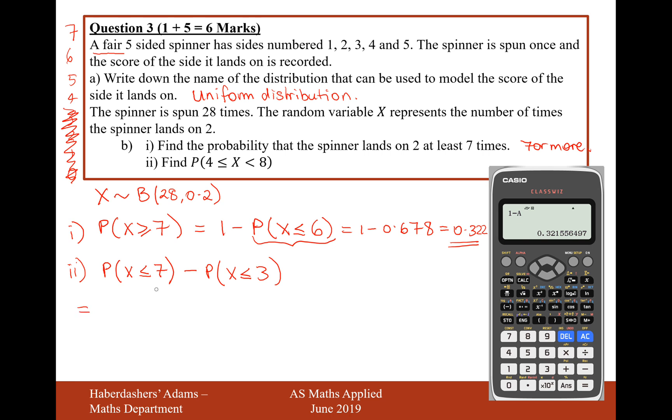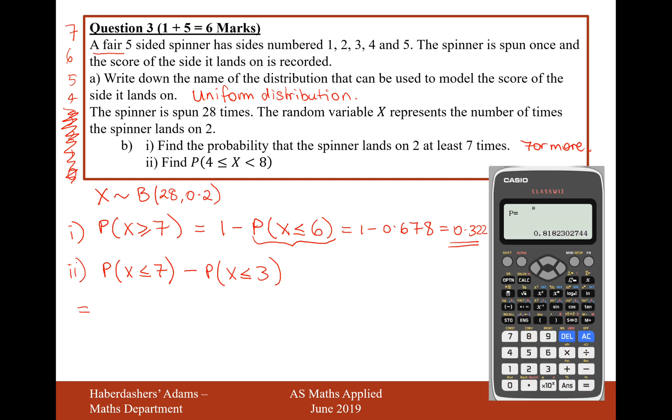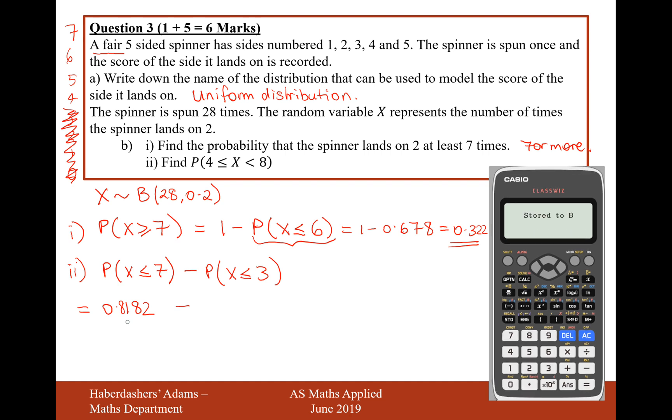So, this is going to be, let's go back to the binomial CD mode, 7, 28, 0.2. That's going to give us a value of 0.818182. This is the probability of scoring 2 on a spinner 7 or fewer times. Take away the probability of, now I've got to do 3, or I'll store this as B in my calculator, because that will be helpful later.